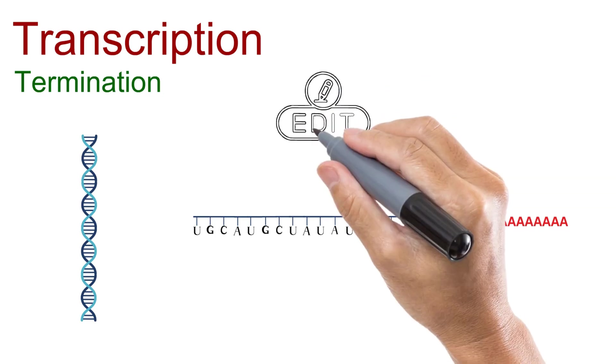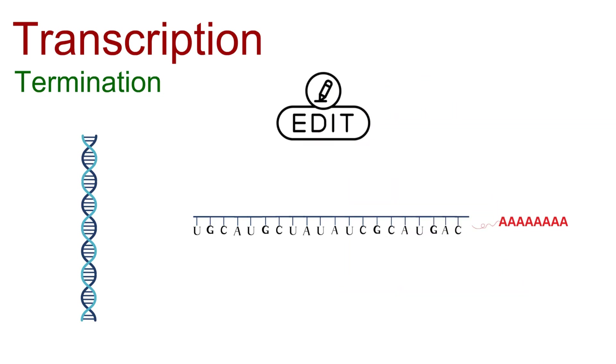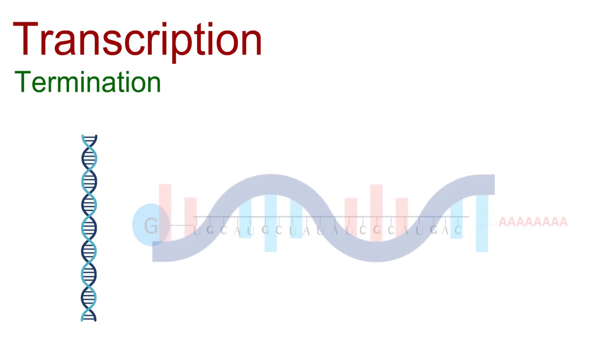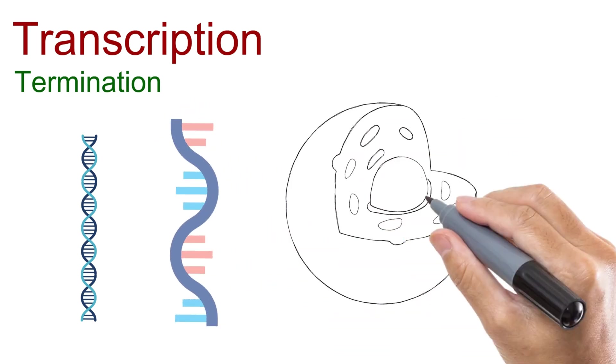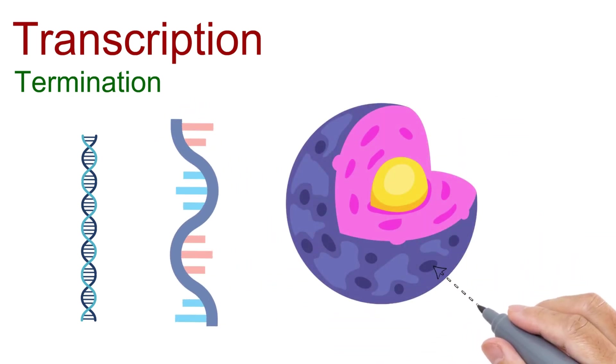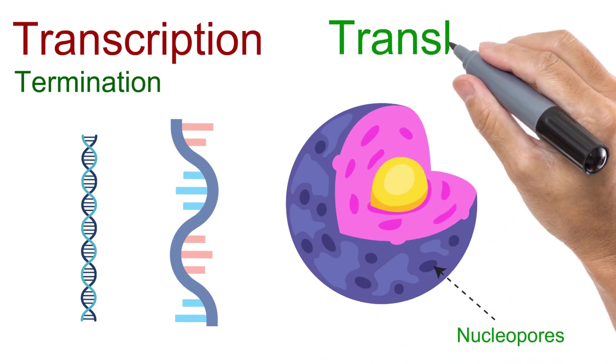Through post-transcriptional modifications, the pre-mRNA is capped, spliced, and fitted with a poly-A tail. Only then does it become a mature mRNA molecule, ready to exit the nucleus and guide the process of protein synthesis. This mRNA now leaves the safety of the nucleus through tiny gateways in the nuclear membrane called nuclear pores. Once in the cytoplasm, the message is ready for the next big step: translation.